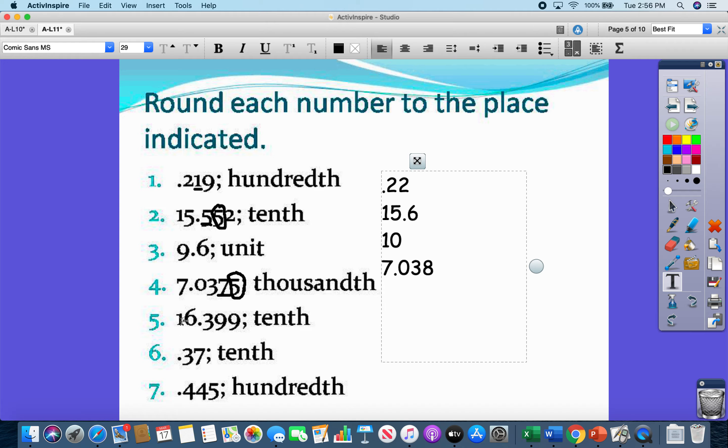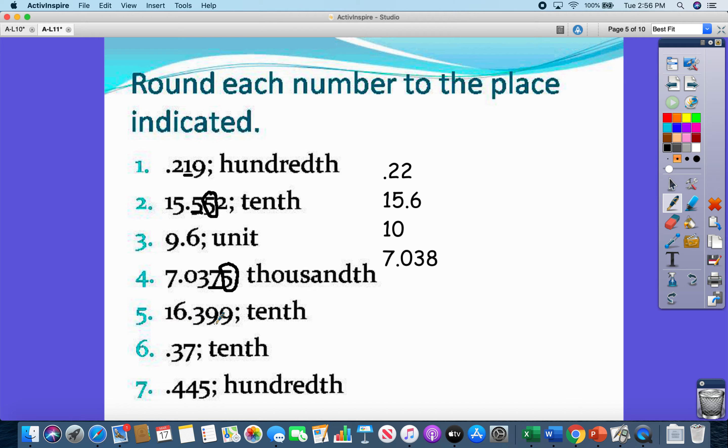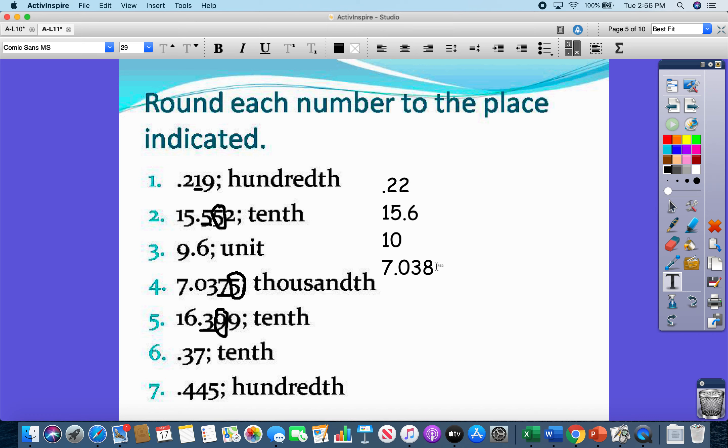All right. Number 5. 16 and 399 thousandths. Rounding to the nearest tenths. Now, this is one of those tricky ones, right? All right. So we've got a 3. We need 9 is going to round which way? Up. So that means I need to change the 3 to a 4, right? 16.4.